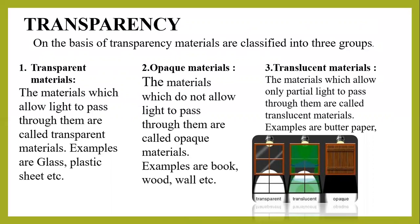Second, opaque materials. The materials which do not allow light to pass through them are called opaque materials. Examples are book, wood, wall, etc.